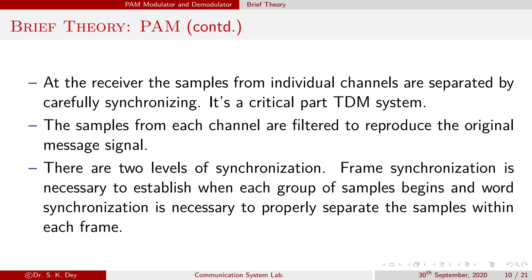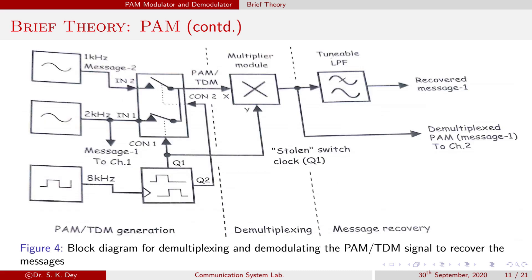At the receiver, the samples from individual channels are separated by carefully synchronizing. The samples from each channel are filtered to produce the original message signal. There are two levels of synchronization. PAM synchronization is necessary to establish when each group of samples begins, and what synchronization is necessary for properly separating the samples within each PAM frame. This is the block diagram for multiplexing and demodulating PAM signal to recover the message signal.